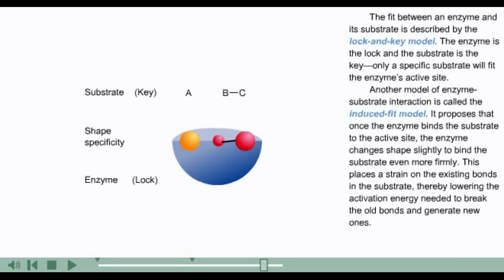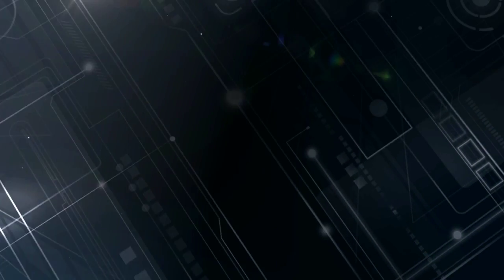Another model of enzyme-substrate interaction is called the induced fit model. It proposes that once the enzyme binds the substrate to the active site, the enzyme changes shape slightly to bind the substrate even more firmly. This places a strain on the existing bonds in the substrate, thereby lowering the activation energy needed to break the old bonds and generate new ones.